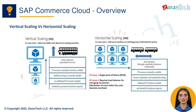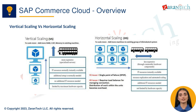SAP Commerce Cloud utilizes horizontal scaling, meaning it scales by adding more instances of the same machine type. This allows flexible auto-scaling to meet demand. Vertical scaling, by contrast, means scaling up to a larger machine type, which has fixed capacity limits.